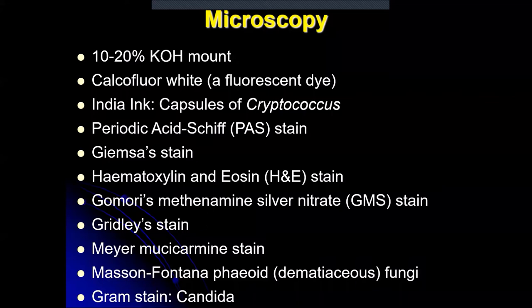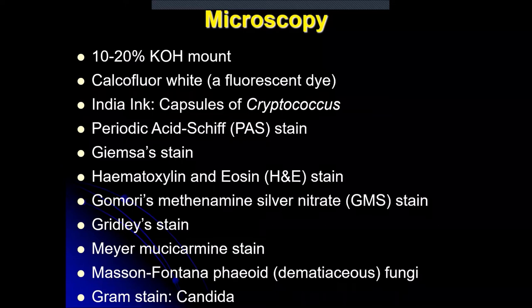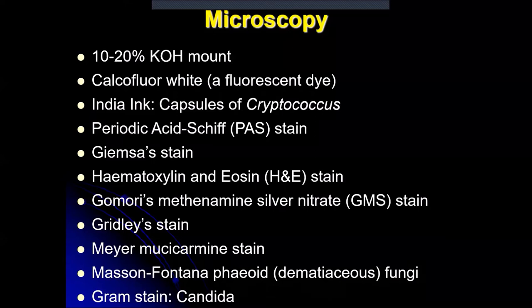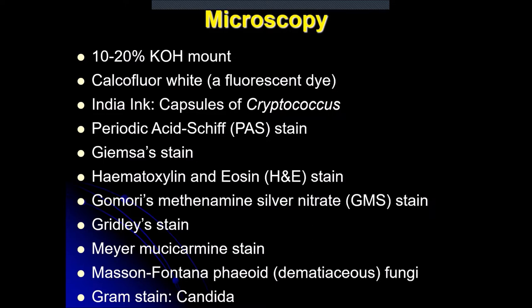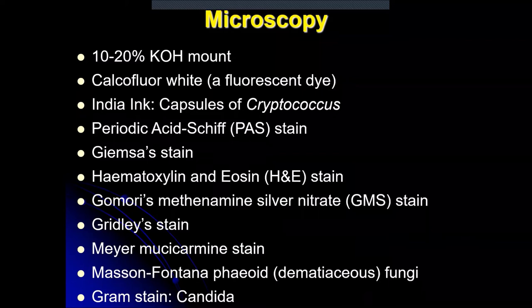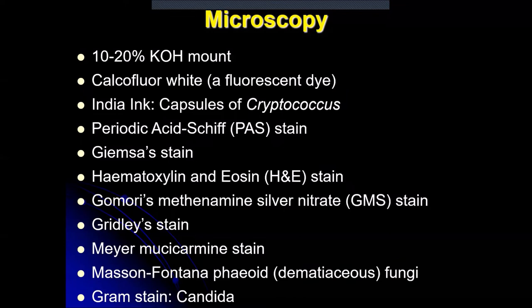Calcofluorite is a fluorescent dye with an affinity for the chitin present on the fungal cell wall. Clinical specimen wet mounts can be stained with calcofluorite and observed under a fluorescent microscope, where fungal elements fluoresce brightly white. India ink preparation is a negative staining technique where only the background is stained. It is used to demonstrate the capsule, which appears as a bright halo around the organism, and is mainly used for capsular fungi such as Cryptococcus neoformans in CSF samples.